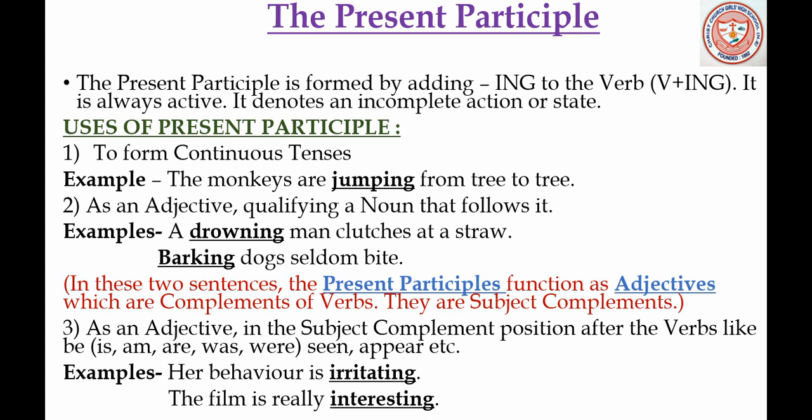Now we shall study the uses of present participle. The present participle is used in the continuous tense — we add 'ing' to the verb 'jump' to make it 'jumping' — which means that the action is still not completed.